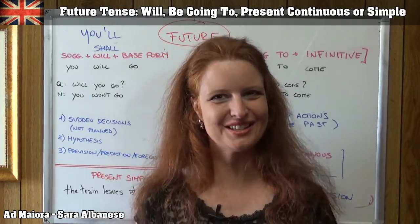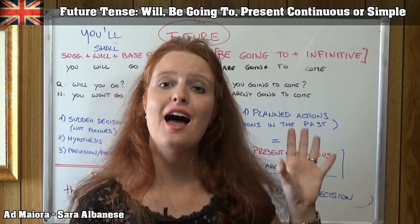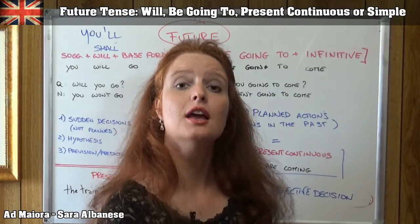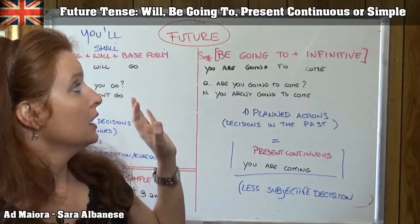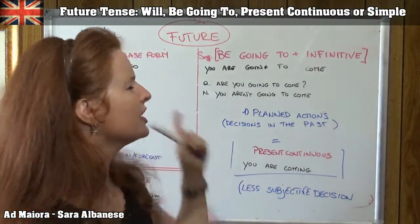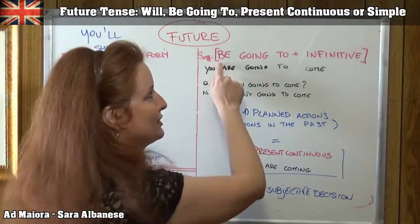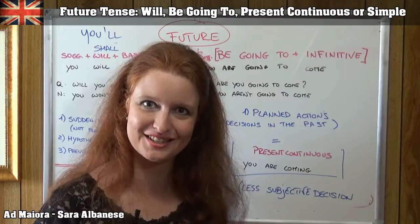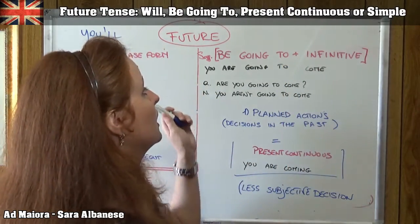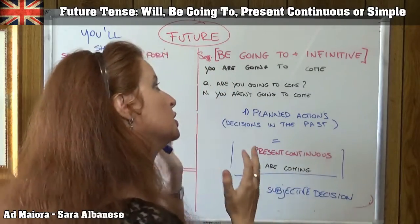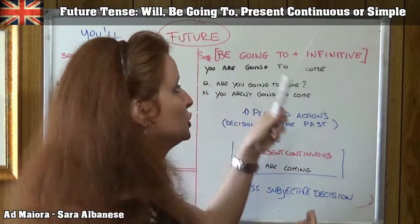Pay attention to the 'be going to' form because people often remember 'going to' but forget there is the verb 'to be' before it. The structure is: subject + be (conjugated) + going to + infinitive. The verb 'to be' is the most important conjugated verb in the sentence — don't forget it. Example: 'You are going to come' — this means you have already decided, perhaps yesterday, to come. It's a planned action.